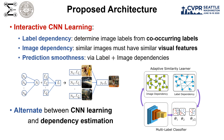We assume prediction should change smoothly across semantically similar images, and that related labels should inform each other. We combine learning multi-label classifiers with label and image dependencies into a smooth loss function. We alternate between CNN learning and estimating label-image dependencies.